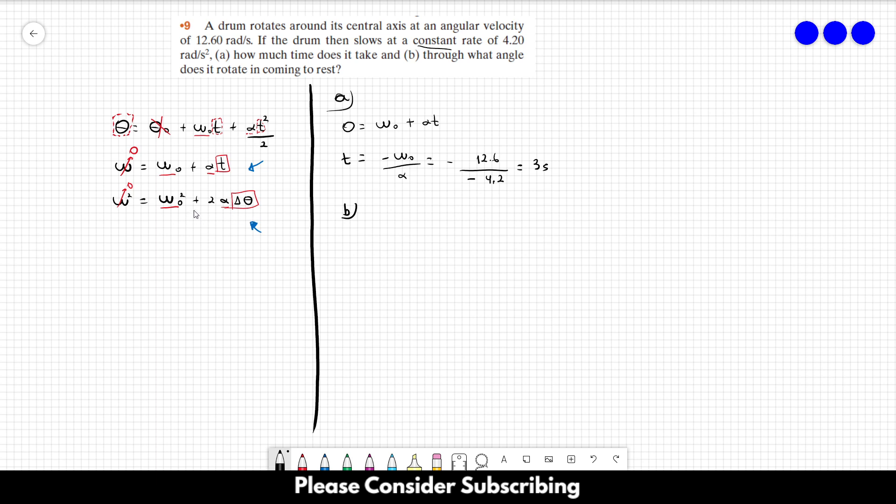For letter B, we can use this equation over here. So 0 equals the initial angular speed squared plus 2 times alpha delta theta. So delta theta is equal to minus omega 0 squared divided by 2 times alpha. This is going to be minus 12.6 squared divided by 2 times minus 4.2. And this gives us 18.9 radians. And that's the answer of letter B.